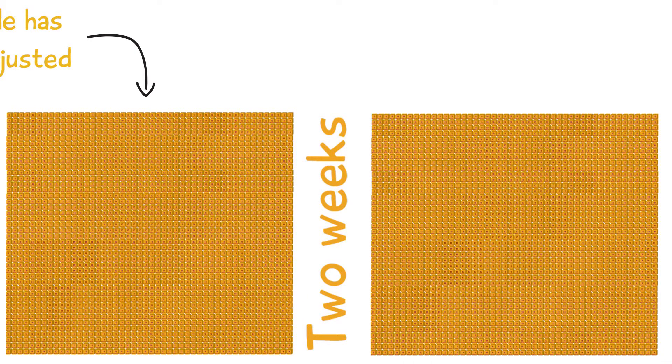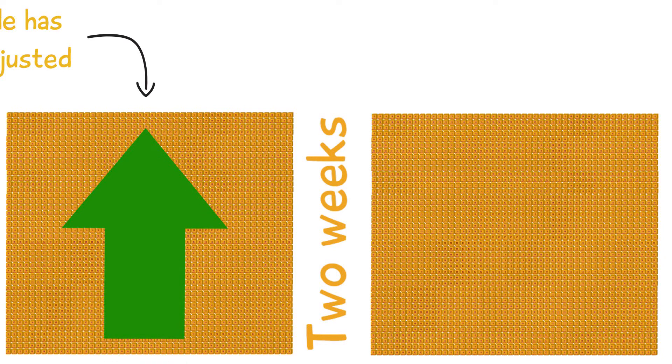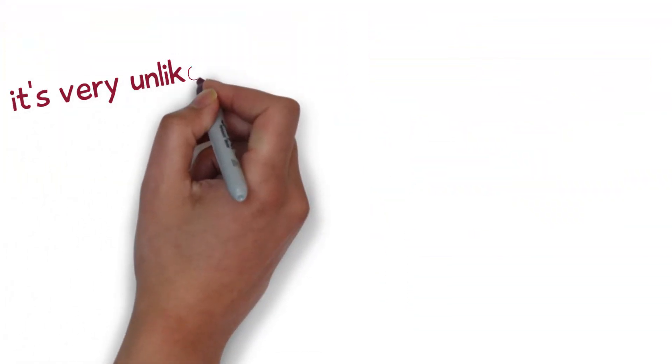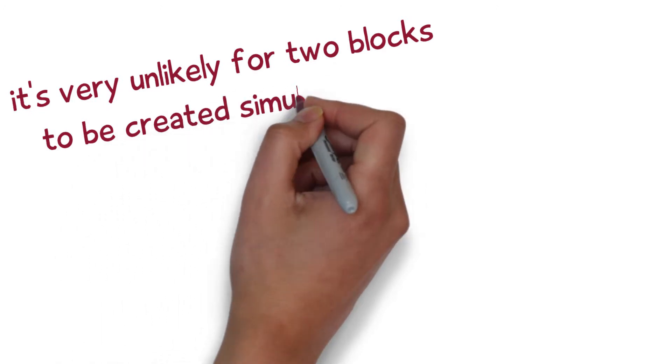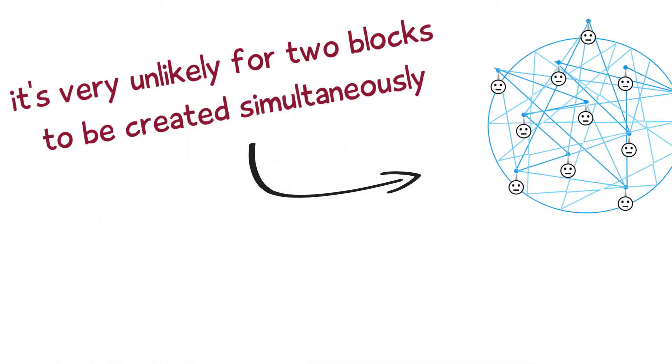Was the computational power of the network so great that it took less than two weeks? Then the difficulty is increased. Did it take longer? Then the difficulty is lowered. With this increased amount of effort it's very unlikely for two blocks to be created simultaneously, giving the nodes plenty of time to reach consensus and validate a block.